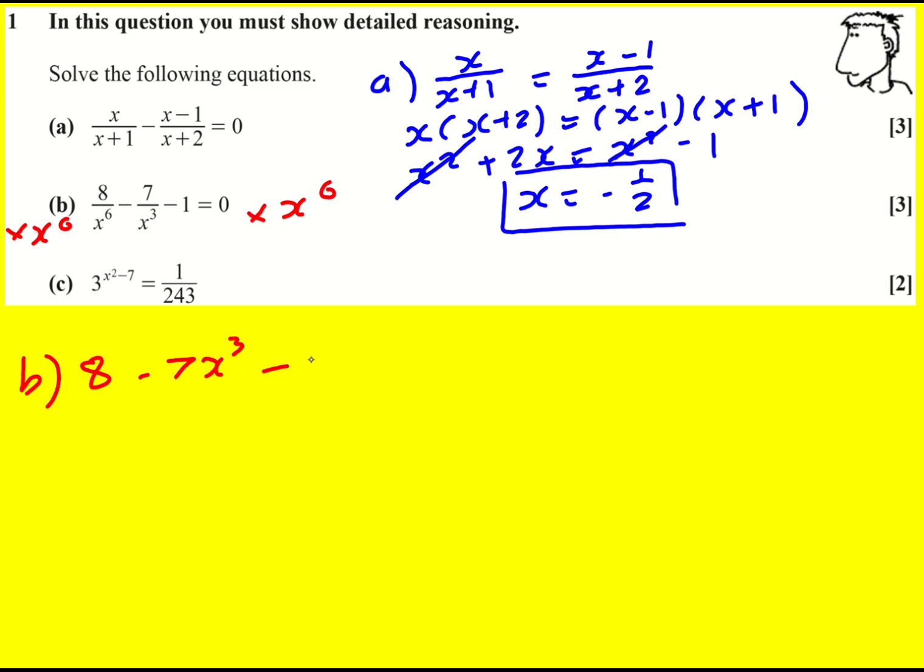Then 1 times x to the 6 is x to the 6 and I've turned this into a hidden quadratic. Technically we should say that x can't equal 0, that's not going to be a solution here anyway though. So let's rearrange it to x to the 6 plus 7x cubed minus 8 equals 0.